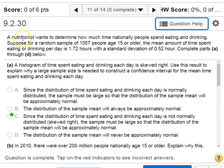For number 11, a nutritionist is looking at the amount of time people spend eating and drinking, takes a large sample of people age 15 or older, gets back their sample mean and sample standard deviation.